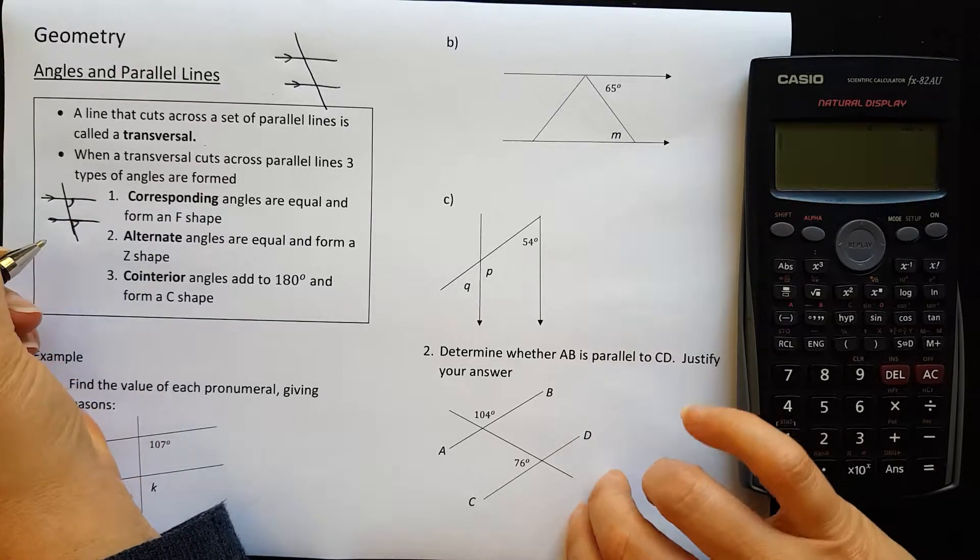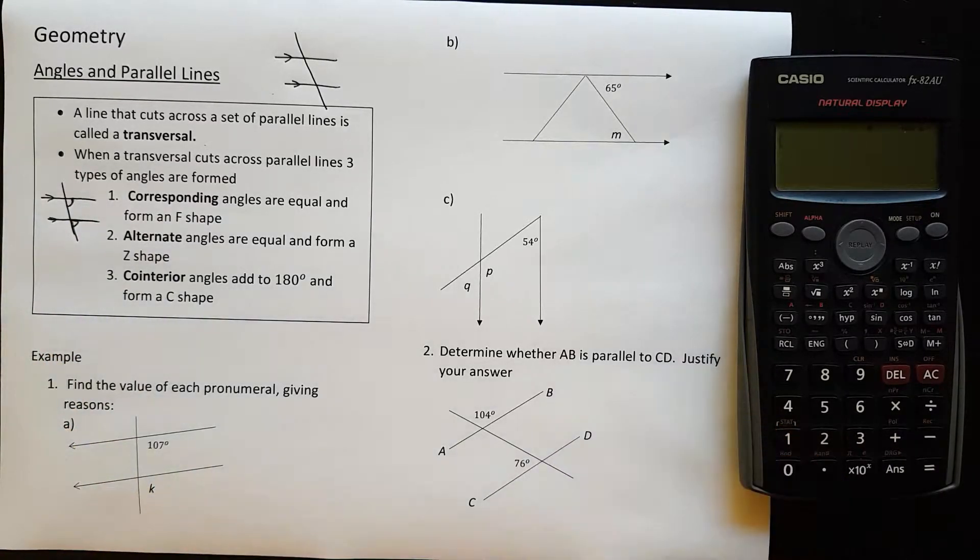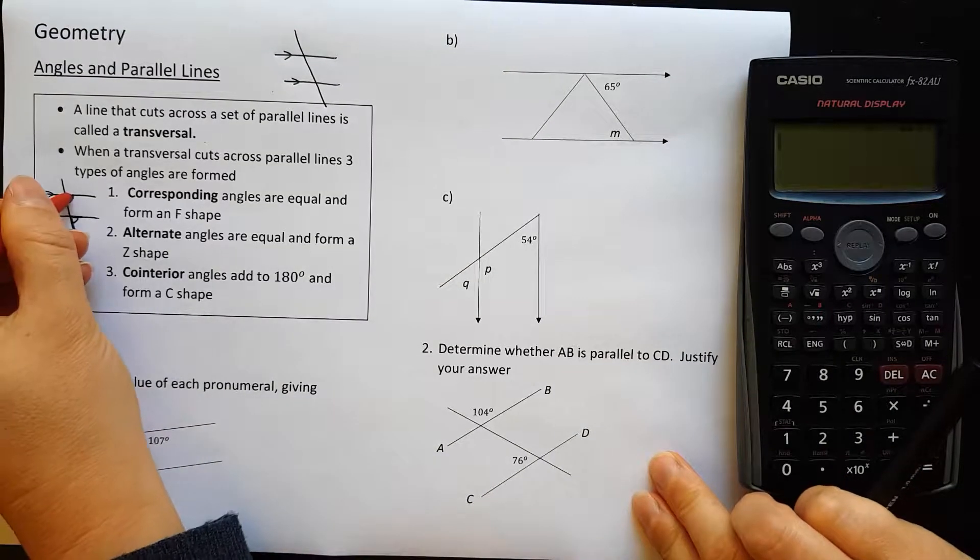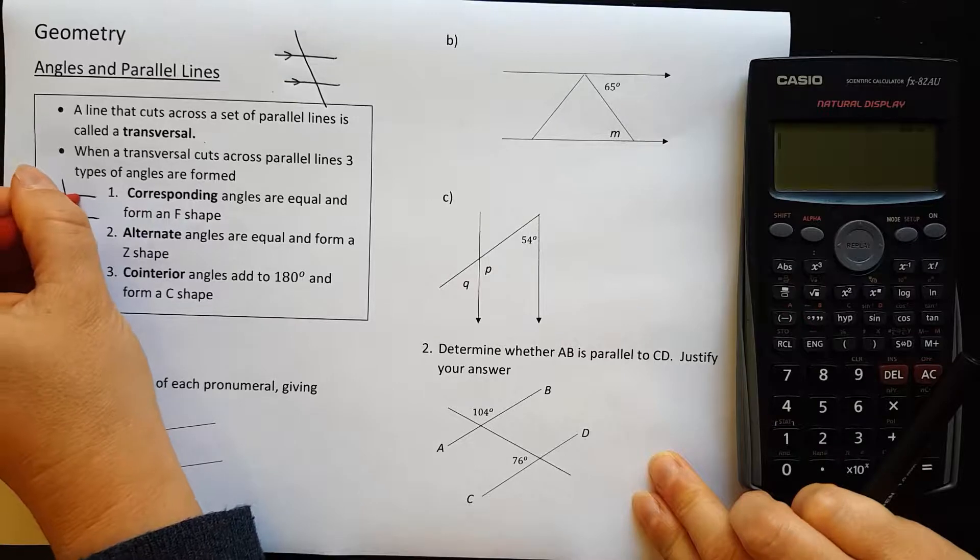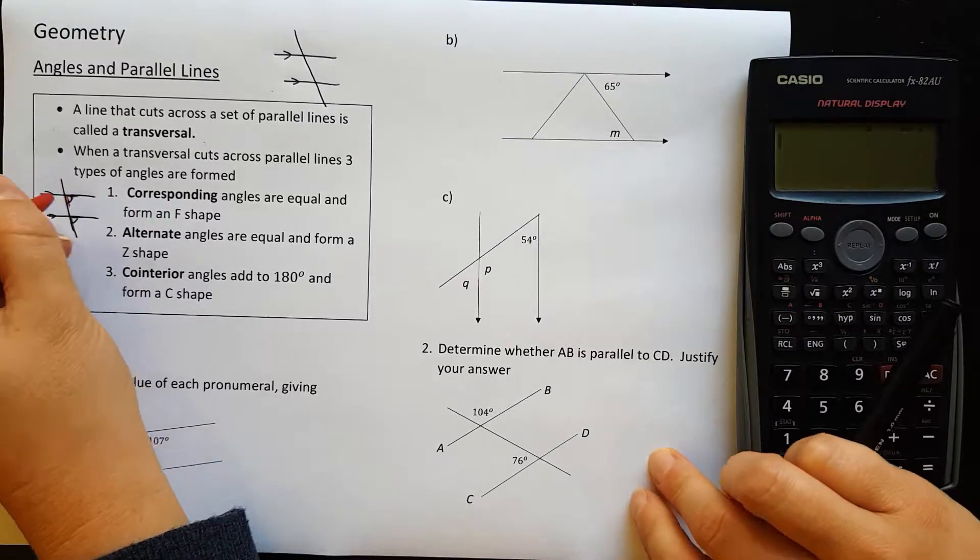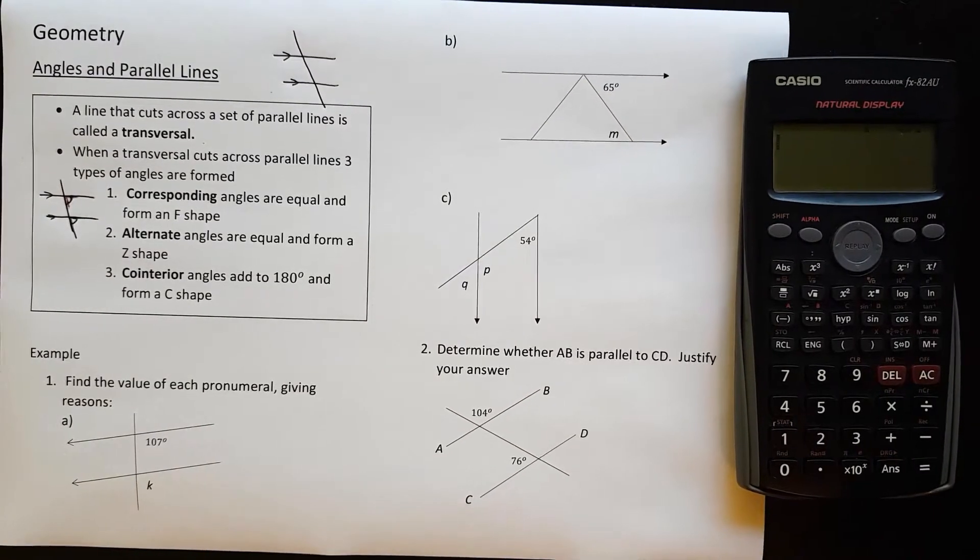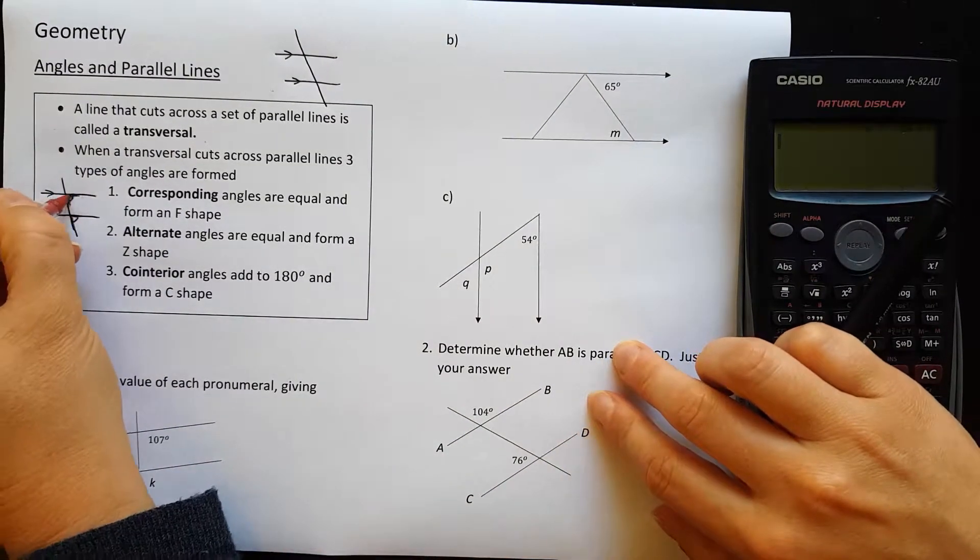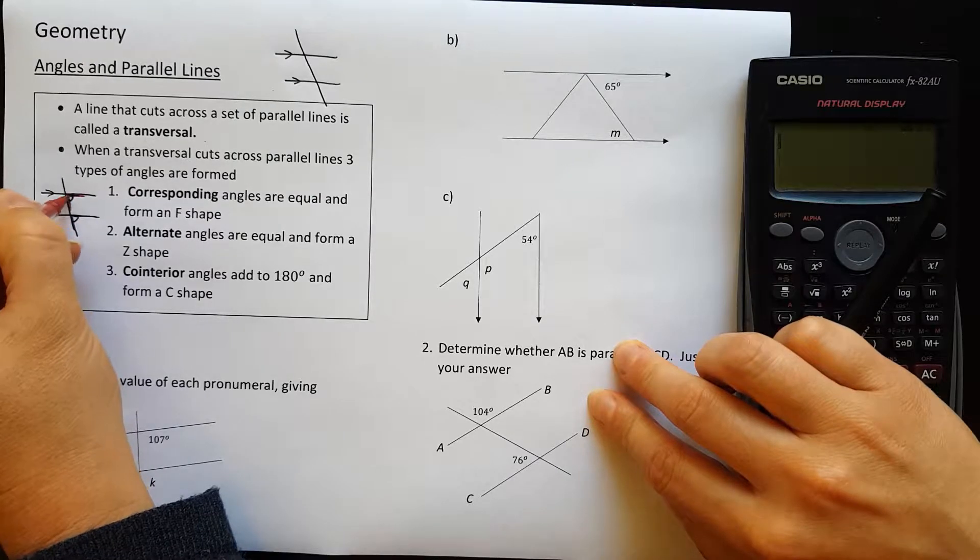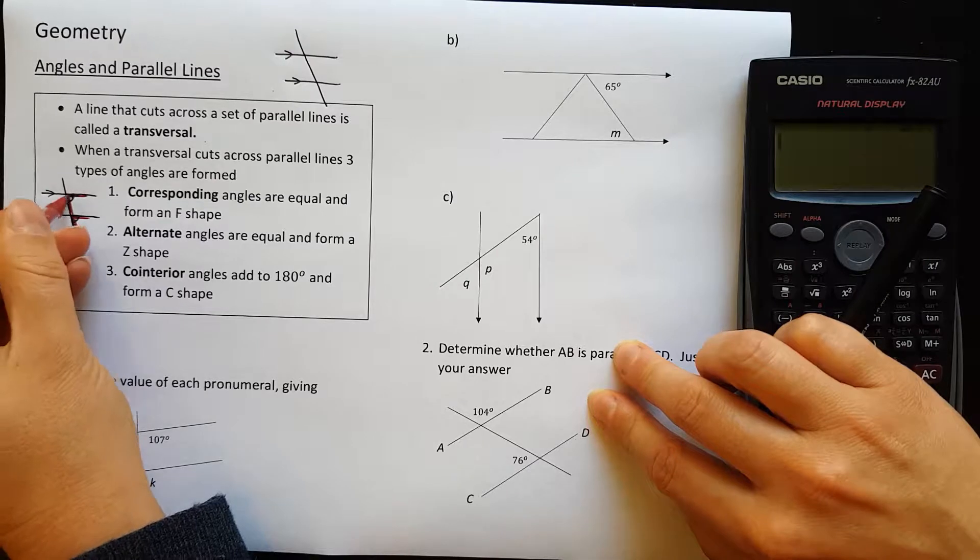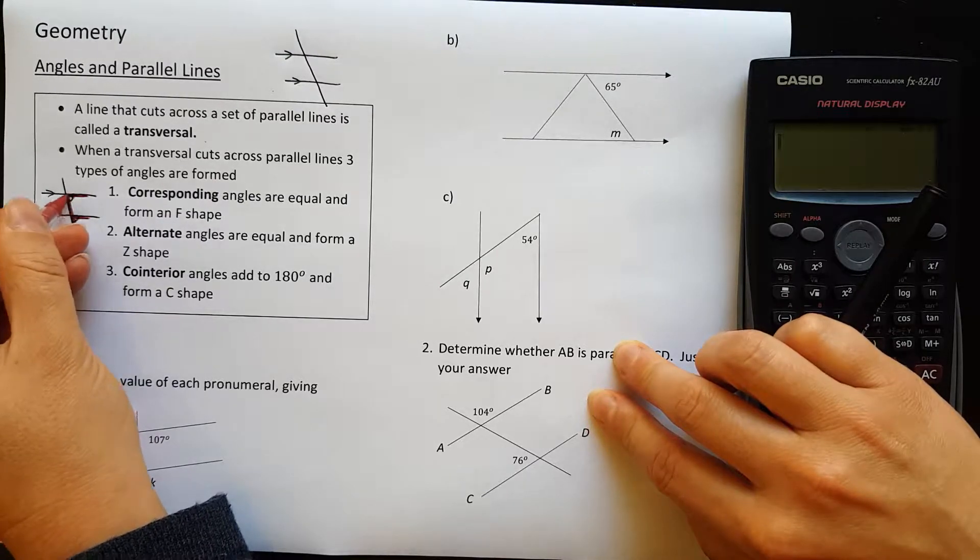So you see if you extend the arms, if I make a little angle in here, let me try that one. So if I make those arms bigger like that and I make these arms bigger, you can see that that is actually making an F like that.